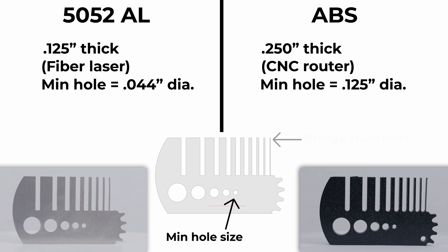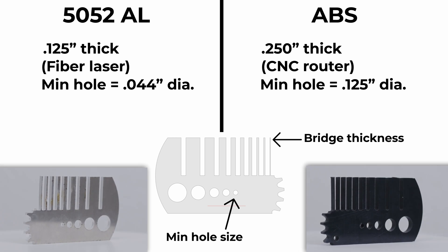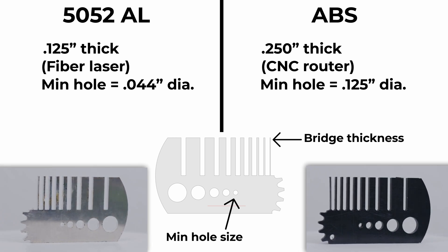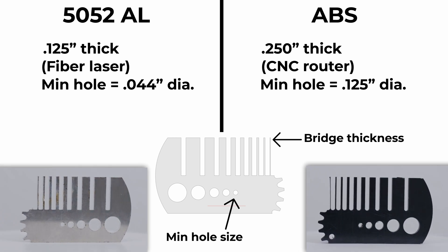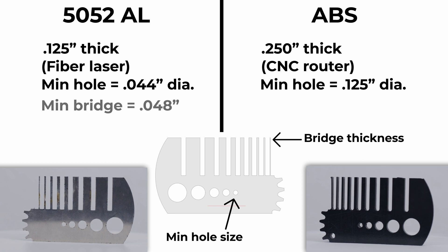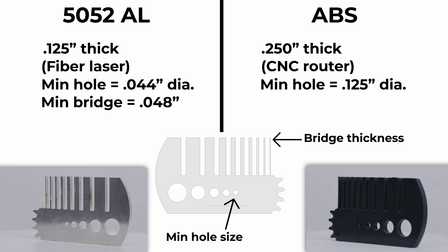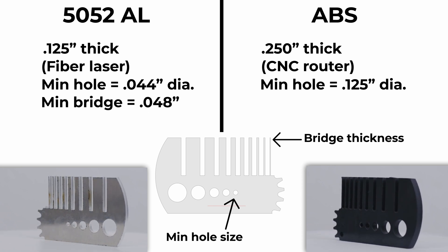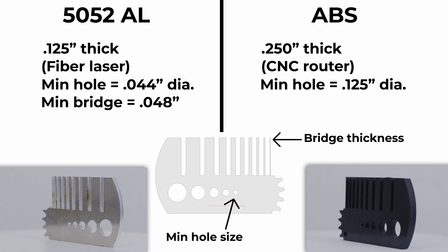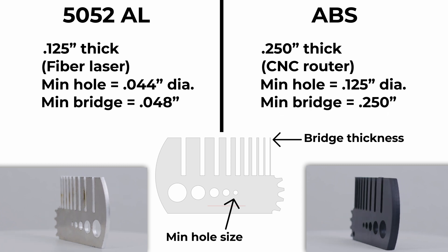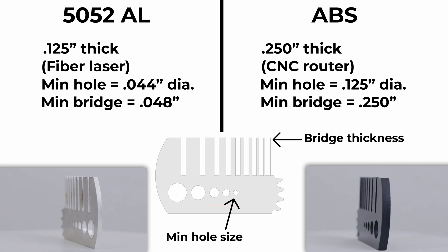When considering bridge thickness, if we look at the 5052 aluminum on the website we're going to see a minimum bridge thickness of 0.048 inches. But when looking at the ABS at a quarter-inch thick, we have a minimum bridge thickness of also a quarter of an inch.